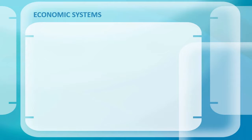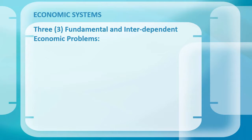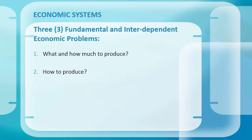Economic Systems: any society, whether rural without advancements or specialized, may somehow confront three fundamental and interdependent economic problems. First, what and how much to produce; second, how to produce; and third, for whom to produce. These three questions are fundamental and common to all economies, but different economic systems differ in how they try to solve them. There are four types of economic systems.